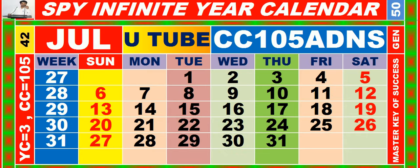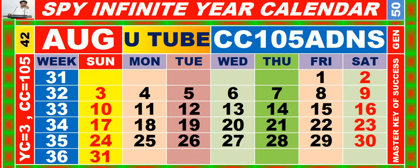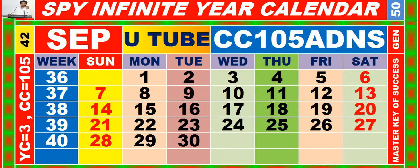Calendar for the month of July having calendar code equal to 105. Calendar for the month of August having calendar code equal to 105. Calendar for the month of November having calendar code equal to 105.